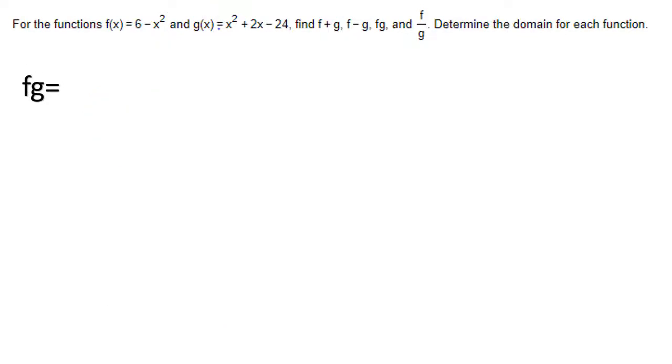Now, again, we've done the addition. We've done the subtraction. We're being asked to multiply. So, I will take the f function, which is 6 minus x squared, and I will multiply it times the g function, which is x squared plus 2x minus 24. Earlier, I said we use the distributive property.